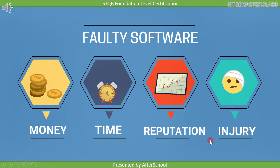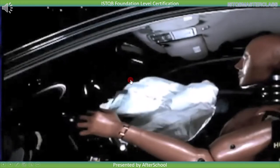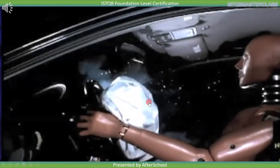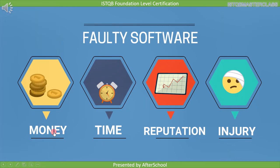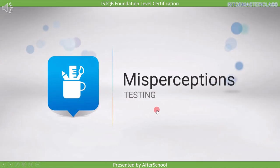Sometimes the defect can also result in injury or death — for example, if the airbag system doesn't work as expected. These were the four impacts of faulty software: loss of money, time, reputation, and injury or death. Now we will see some of the misconceptions about testing.